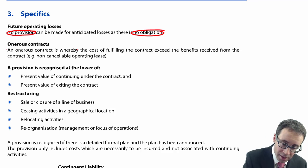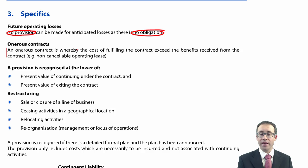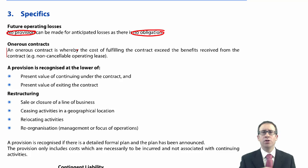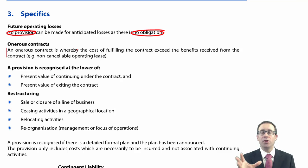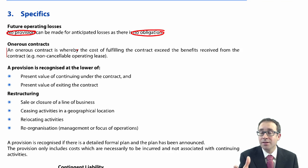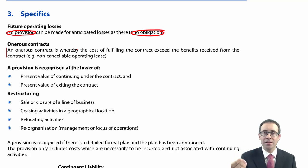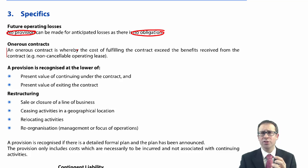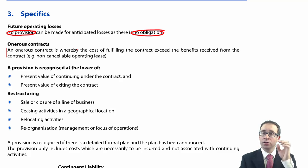An onerous contract is one whereby the cost of fulfilling the contract exceeds the benefits received from it. So maybe you have a non-cancellable operating lease of some premises. You know how much it will cost to lease the property until the end of the lease period, but you decide to move away and rent other premises. You might sublet if allowed, but it's still an onerous contract because the income from subletting is likely to be less than the cost of fulfilling the contract — the outflows exceed the inflows.